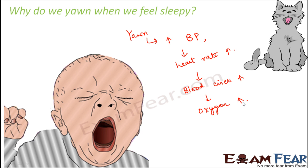This improved oxygen supply improves overall motor function and alertness. That's why when you yawn, it actually makes you more alert. By breathing deeply during a yawn, you take in a little more oxygen than usual, which helps in better blood circulation and improves your motor functions and alertness.